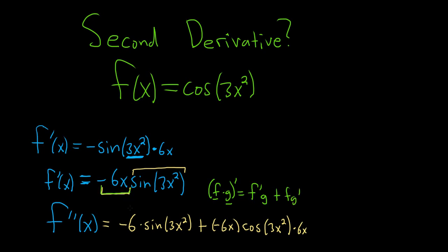So the derivative of negative 6x is negative 6 — that's the derivative of the first — times the second, plus the first, and then times the derivative of the second, which does require a chain rule. The derivative of sine is cosine, and then you multiply by the derivative of the inside.